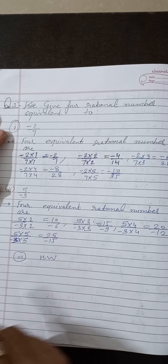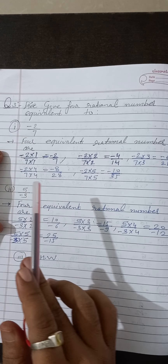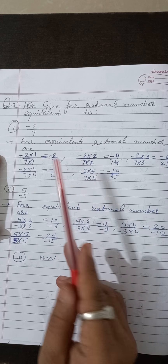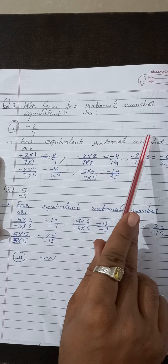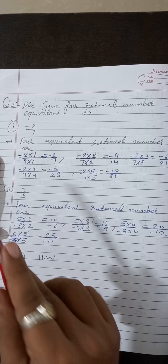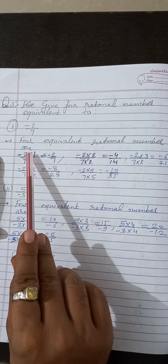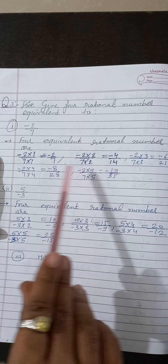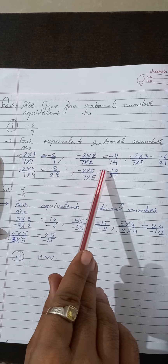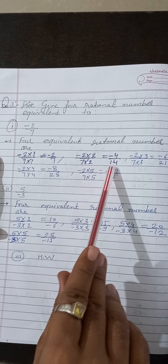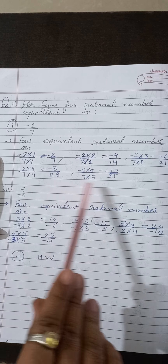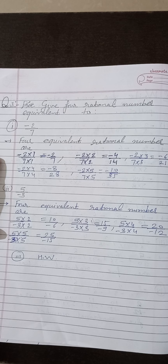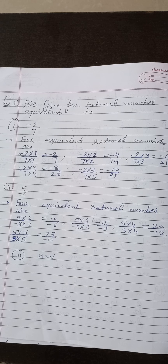Question number 3: give four rational numbers equivalent to a given rational number, for example minus 2 by 7. Multiply numerator and denominator by 2, 3, 4, 5 to get minus 4 by 14, minus 6 by 21, minus 8 by 28, minus 10 by 35. We have found four equivalent rational numbers.